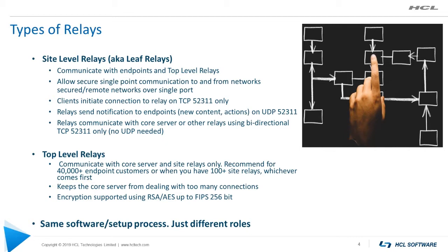Also factor in relays acting as a backup for a relay that may have gone down. Clients can be assigned primary, secondary, and even tertiary — even fourth and fifth relays. If a relay handling 5,000 endpoints goes down, do you really want 5,000 endpoints failing over to another relay that is already handling 5,000 endpoints? That relay will run out of TCP sockets pretty quickly. So keep that in mind when deciding how many relays to deploy.